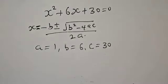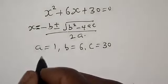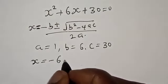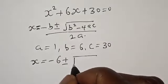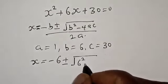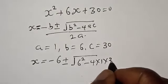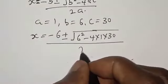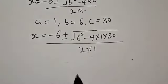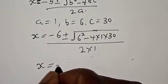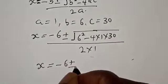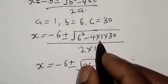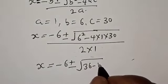From this equation, a is equal to 1, b is equal to 6, c is equal to 30. Then we have s is equal to minus 6 plus or minus square root of 6 squared minus 4 multiplied by 1 multiplied by 30, all over 2 times 1.